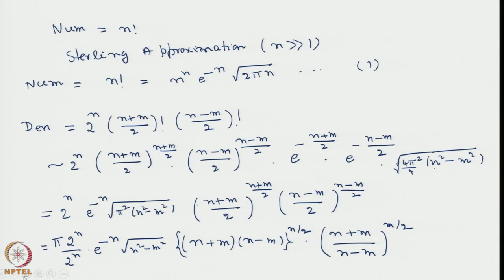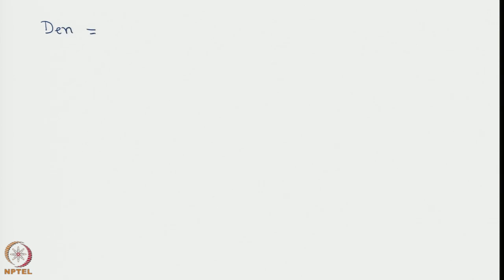Continuing, we will see that the 2 to the power n terms will cancel, and here n squared minus n squared — I take the n out. So n squared, when you take it out, it will come out as n here, and 1 minus n squared by n squared will come here. Similarly, this term also is n squared minus n squared. So when I take out n, it will be n to the power n, and as a result I can write the denominator in a simplified way.